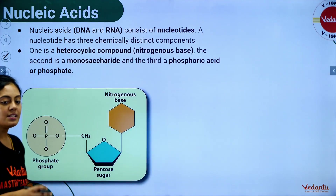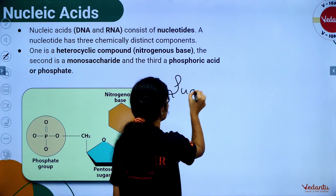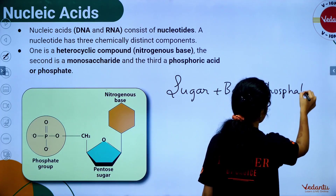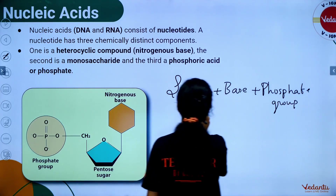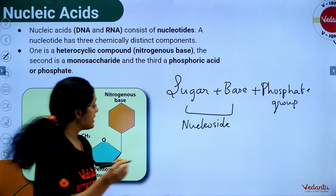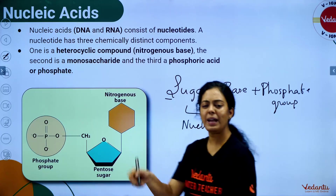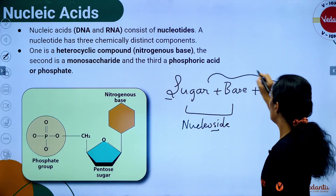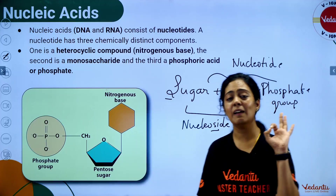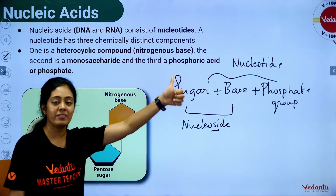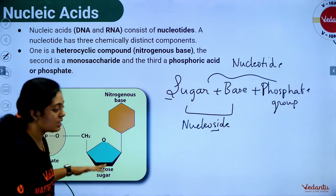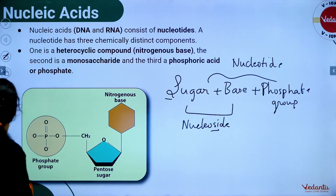What is a nucleic acid composed of? It is made up of a sugar, a base, and a phosphate group. Sugar plus base is called a nucleoside. Sugar plus base plus phosphate is called a nucleotide. Three important components: nitrogenous base, ribose sugar, and phosphate group — these are present in your nucleotide.